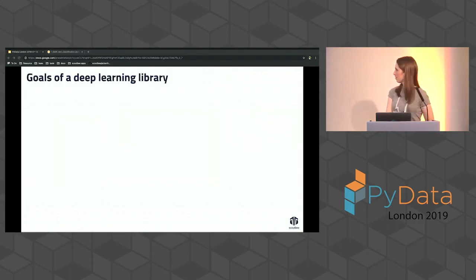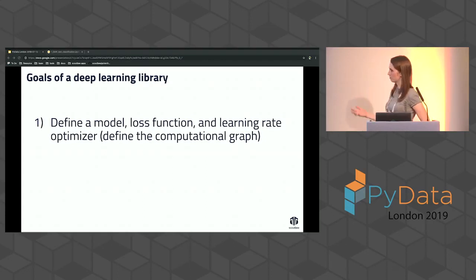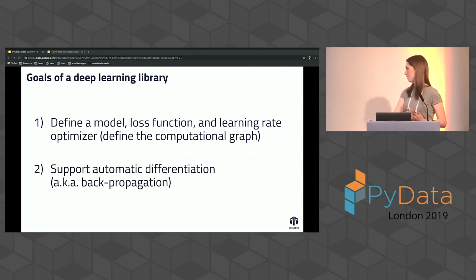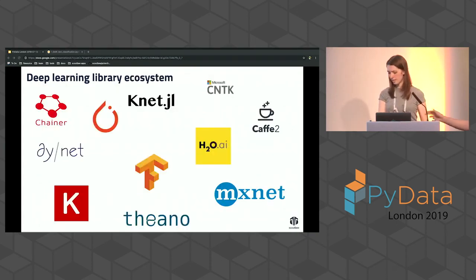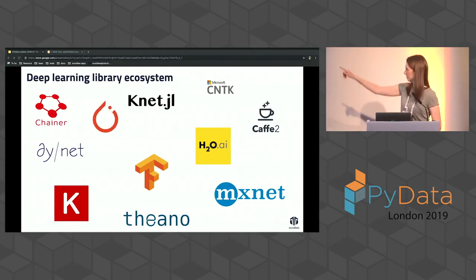To talk about deep learning libraries, we first want to talk about what they do — their primary objective. We want to be able to define a model, a loss function, and some kind of optimizer, to define how our matrices are processed and how the model is set up to learn. We also want support for automatic differentiation, which is back propagation. PyTorch is among the recognized libraries in this ecosystem.